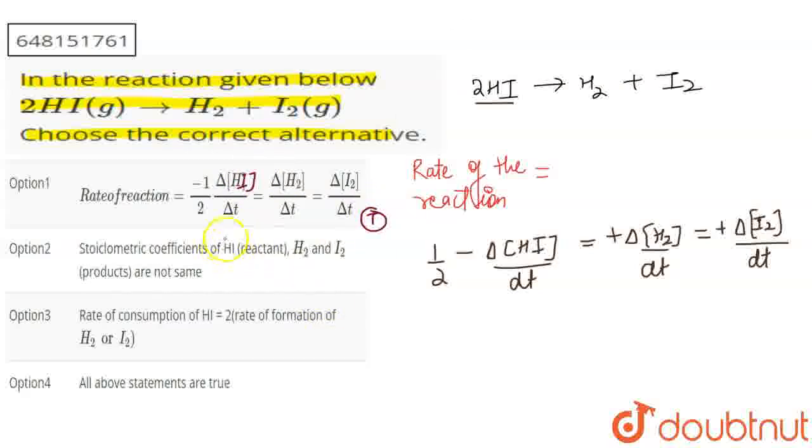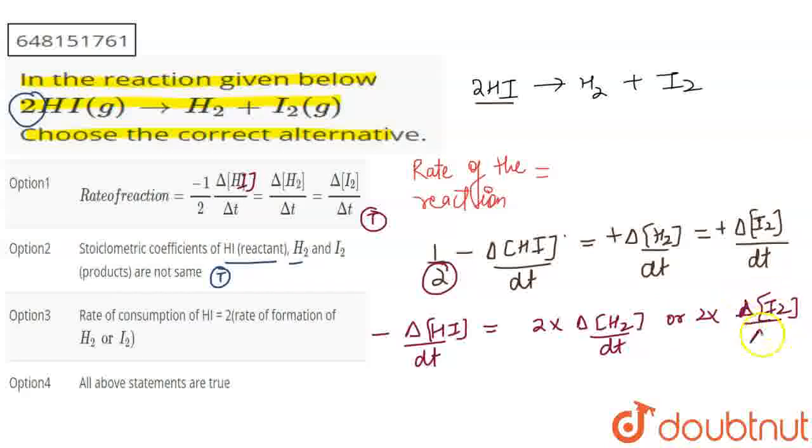Next, the stoichiometric coefficients: H₂ and I₂ both have coefficient 1, while HI has coefficient 2. So the rate of consumption of HI is twice the rate of formation of H₂ or I₂. All these statements are true, so option 4 is correct.